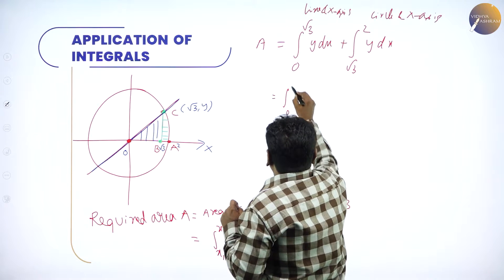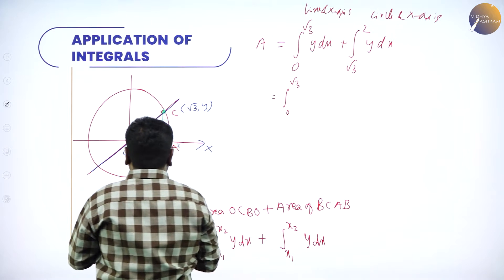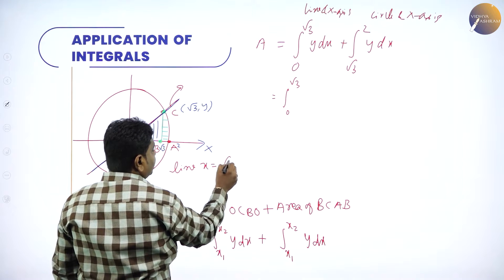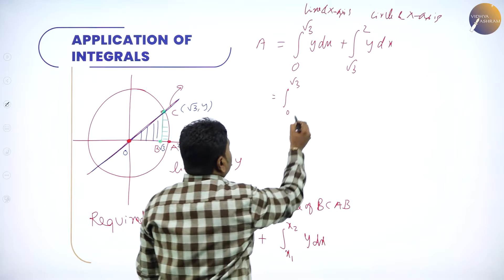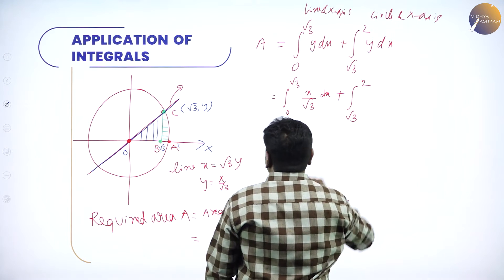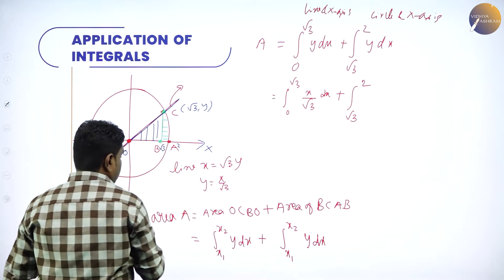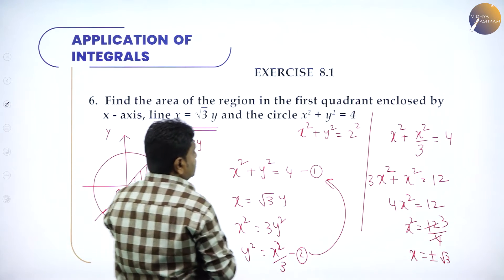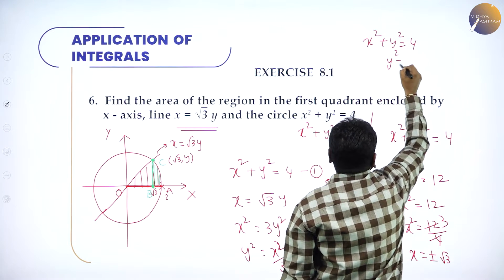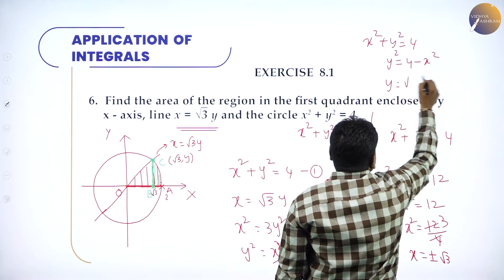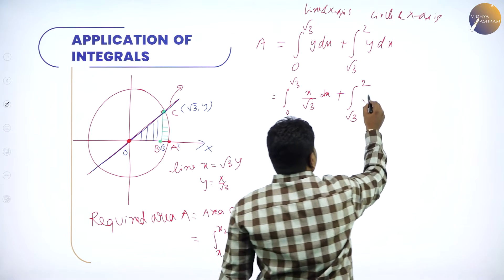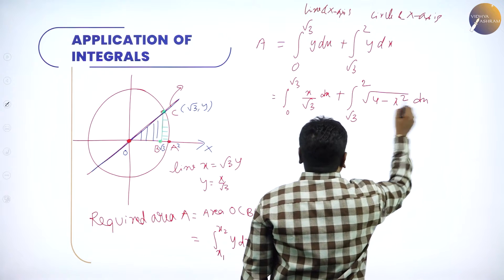Therefore, the required area equals the integral from 0 to √3 of y (from the line) dx plus the integral from √3 to 2 of y (from the circle) dx. The line given is x = √3·y, so y = x/√3. The circle is x² + y² = 4, so y² = 4 − x², and y = √(4 − x²), taking the positive root since we are in the first quadrant.